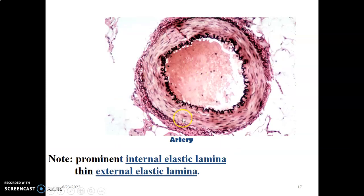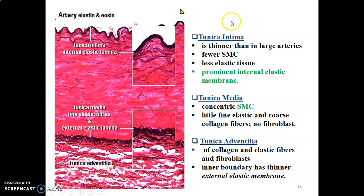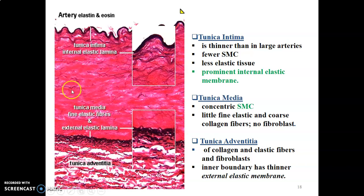Now we go to the muscular artery. You have a prominent internal elastic lamina with abundant smooth muscle cells in the media — so it is very prominent. The external elastic lamina is thin, but the internal is very prominent. In the muscular artery, the tunica intima is thinner than that of large arteries, with few smooth muscle cells and less elastic tissue, but the internal elastic lamina is very prominent. In the tunica media, you see concentric smooth muscle cells with some fibroblasts and connective tissue. Then tunica adventitia has collagen, fibroblasts, and elastic fibers, with the external elastic lamina separating it from tunica media.